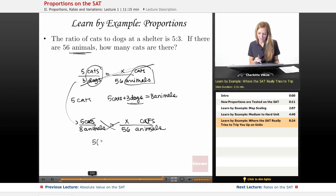So I have 5 times 56, which is equal to 8x, and I end up with x equal to 35, and that's how many cats I have.